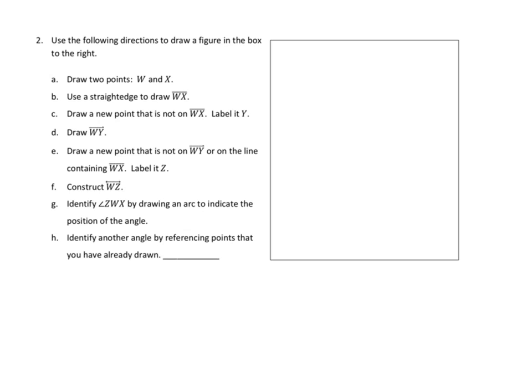Let's take a look at number two. The directions say: use the following directions to draw a figure in the box to the right. Part A: draw two points, W and X. I'll draw W right here and put X over here. Part B: use a straight edge to draw the line segment WX. Notice from our lesson that the line segment WX doesn't have arrows on either end, so we draw directly from one point to the other. There's line segment WX.